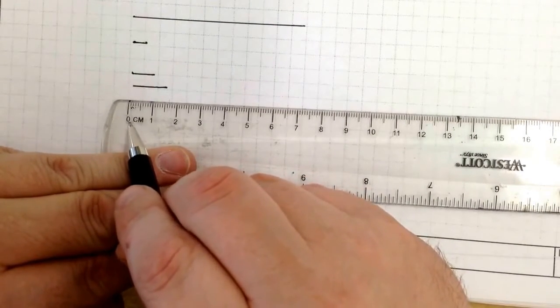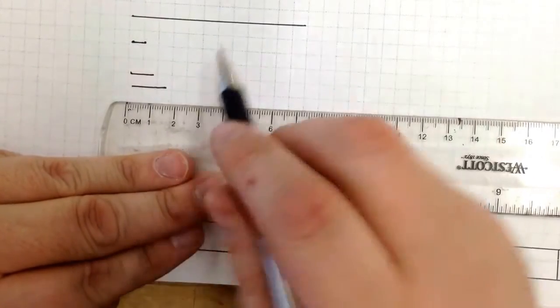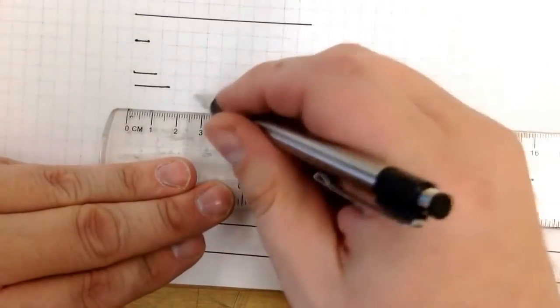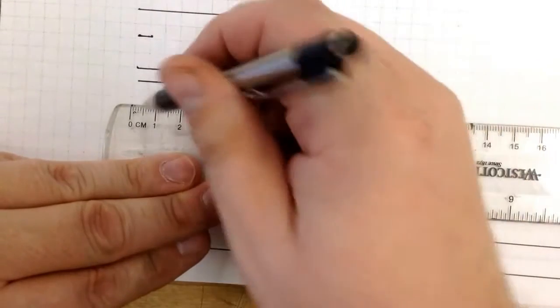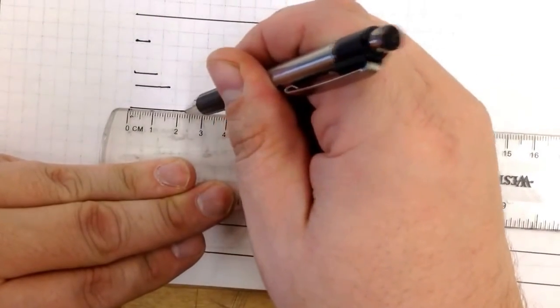And all you have to do is count the lines. So if I, last example, want 2.3 centimeters. It's right there. Zero to 2.3.